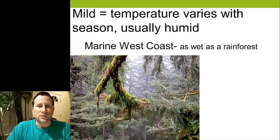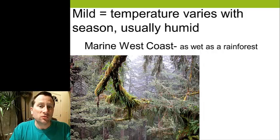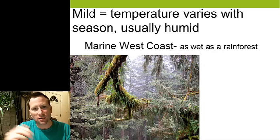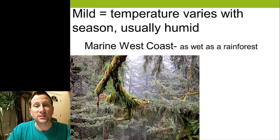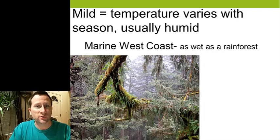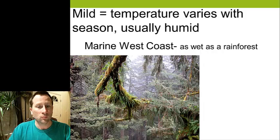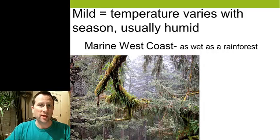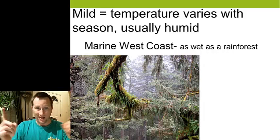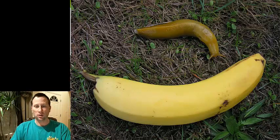Our next main climate category is the mild climate, meaning they have seasons and it's usually fairly humid. Our first example is the marine west coast — this is as humid as it gets. It's essentially a temperate rainforest, meaning they get as much precipitation as a tropical rainforest but it's more mid-latitude and they have seasons. I've been to Northern California — you're driving along the beach, you go over a hill, and you're in a rainforest with giant redwood trees, sequoias, Spanish moss hanging from the trees, and bright yellow banana slugs.